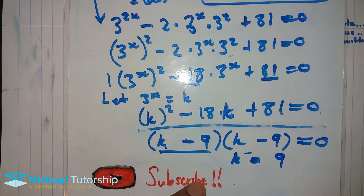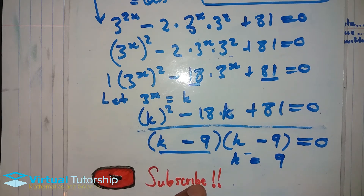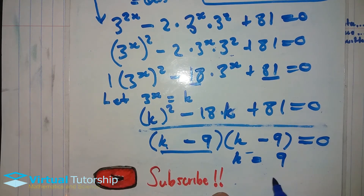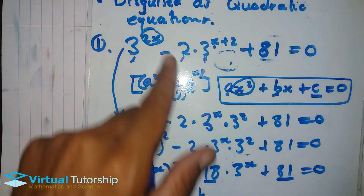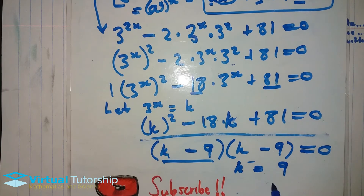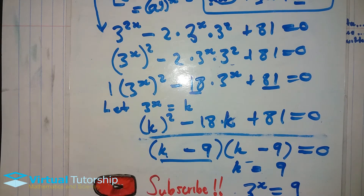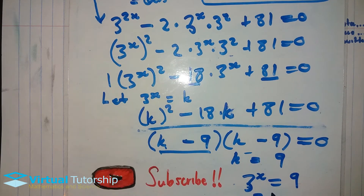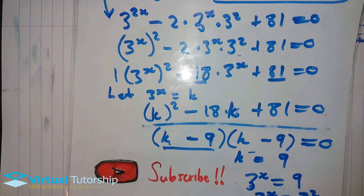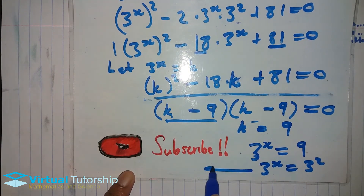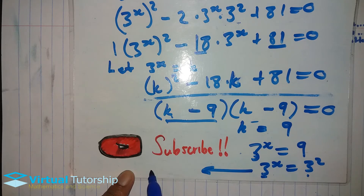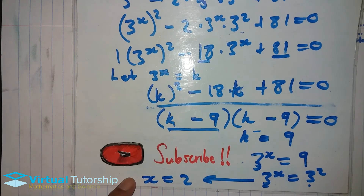So the solution: k is equal to 9. But remember, I'm solving for x, not k. So I replace k with 3 exponent x, which gives: 3 exponent x equals 9, which equals 3 exponent 2. Using the one-to-one ratio — when the bases are equal we can drop the exponents — so x equals 2. That's a nice solution.